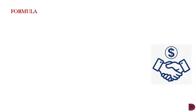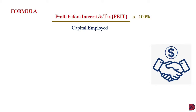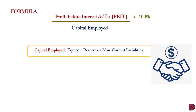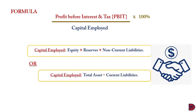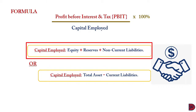The formula for return on capital employed is: profits before interest and tax, divided by capital employed, multiplied by 100 percent — giving us the percentage. Capital employed is equity plus reserves plus non-current liabilities; in other words, the total equity section on the statement of financial position plus non-current liabilities or long-term debt. Alternatively, capital employed can be total assets less current liabilities — the upper section of the statement of financial position less current liabilities.